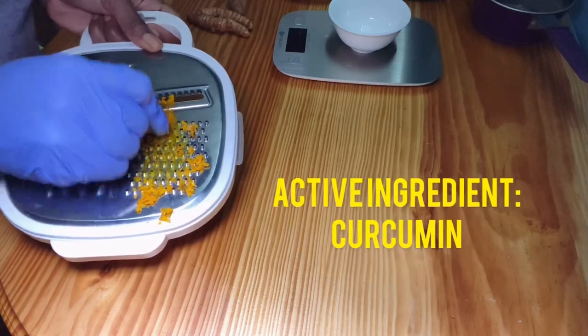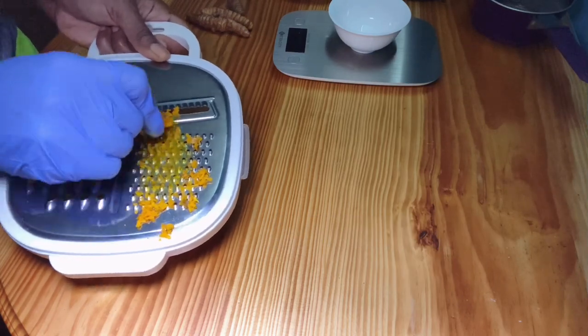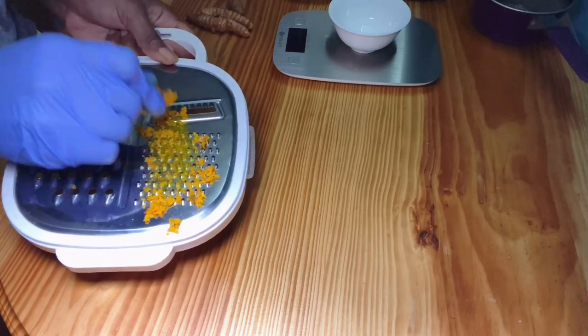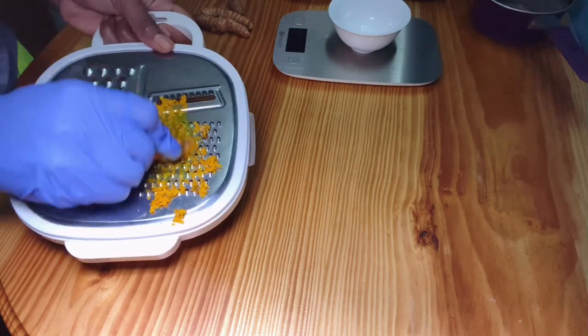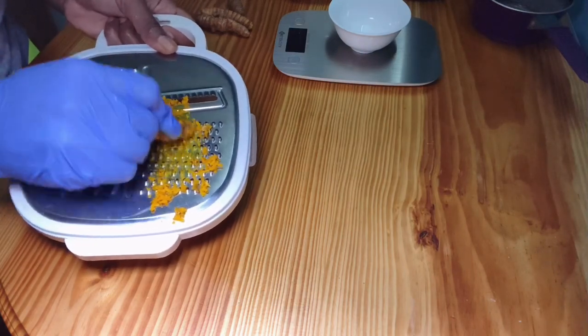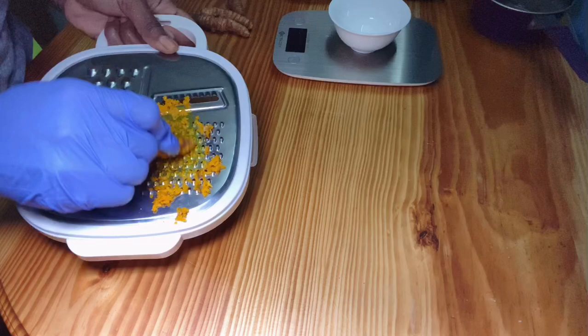Curcumin, which is an active ingredient, gives turmeric its characteristic yellow color. Curcumin has been proven to have anti-inflammatory and immune-boosting properties.